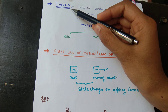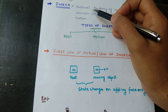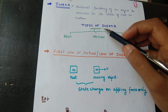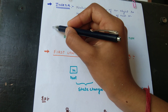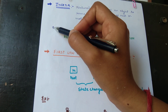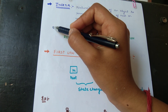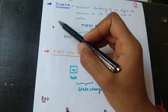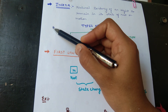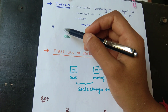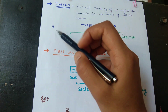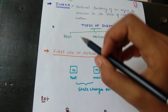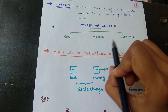Now we will discuss the next topic: inertia. What is inertia? An object at rest shows inertia of rest — its state of rest is its inertia. An object in motion shows inertia of motion. This natural tendency of an object to remain in its state of rest or motion is called inertia. There are three types of inertia: inertia of rest, inertia of motion, and inertia of direction.